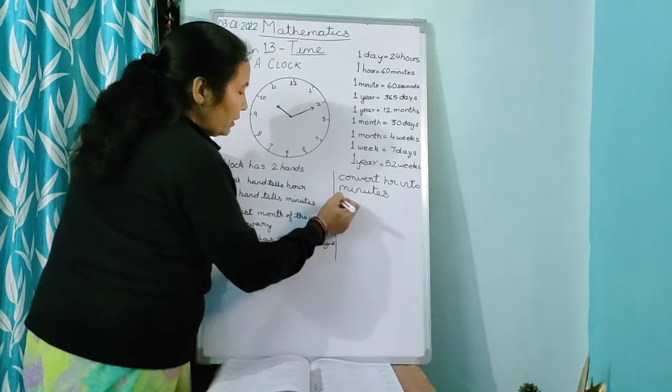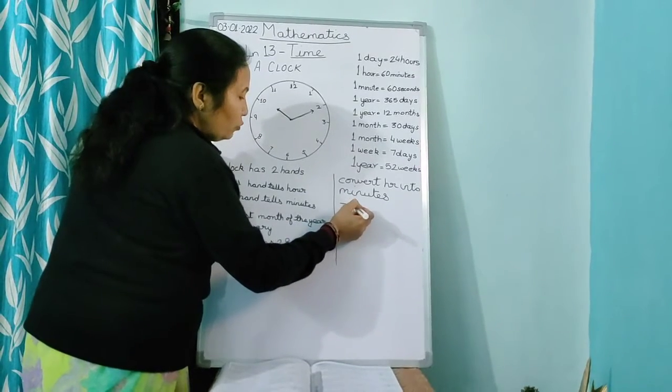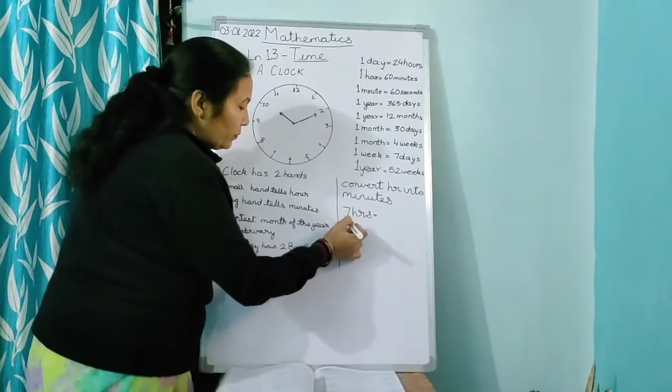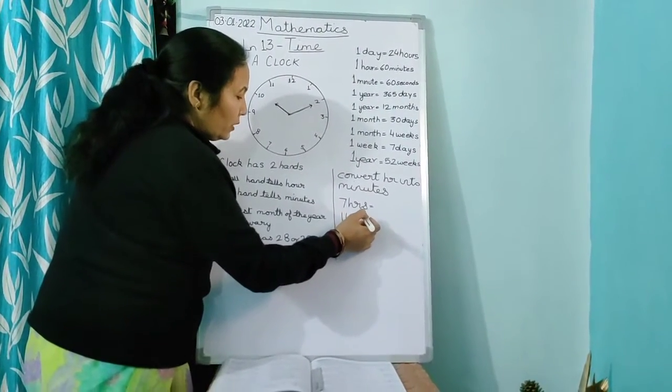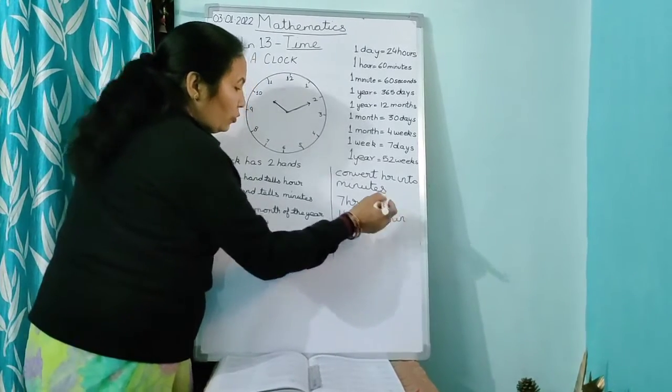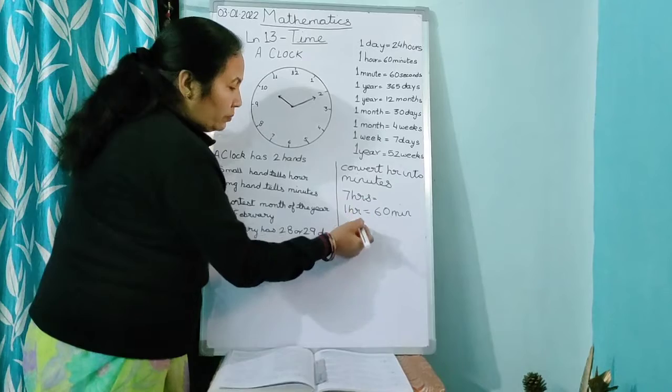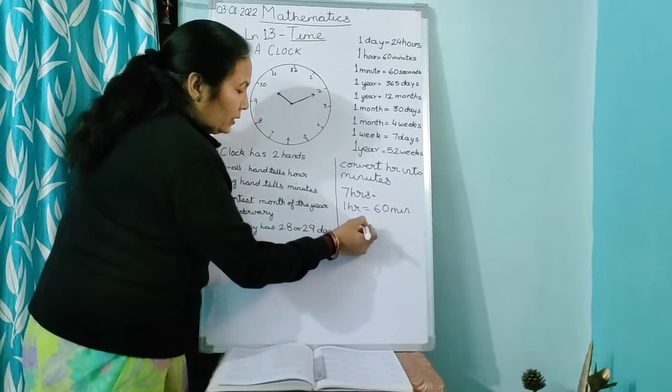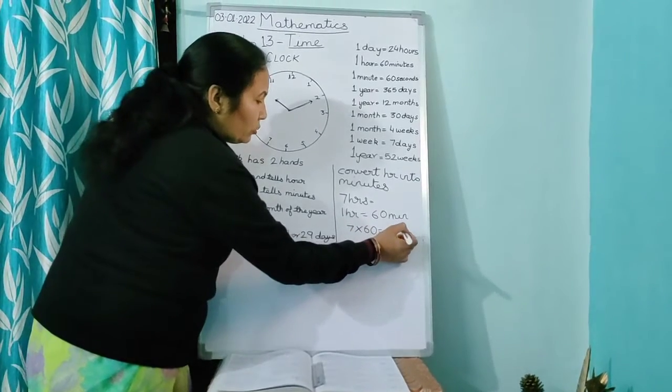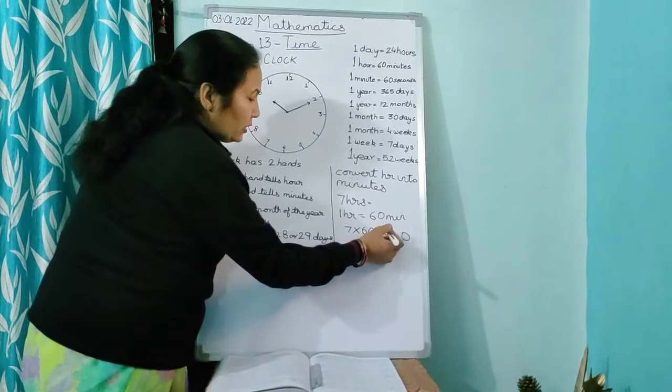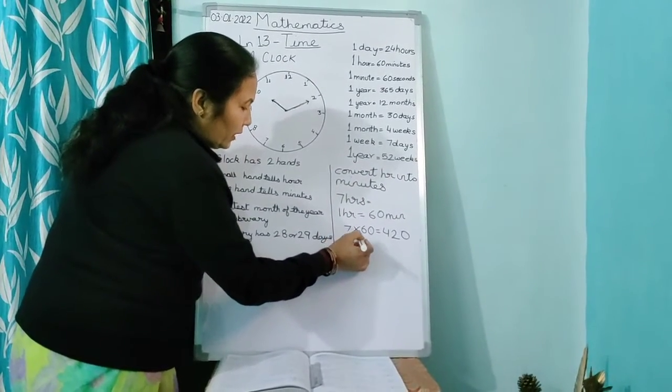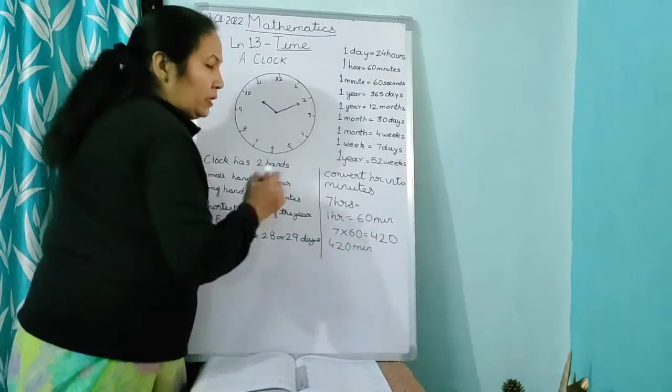In the first sum, convert hours into minutes. Now suppose you have 7 hours and you have to convert into minutes. So you will write 1 hour is equal to 60 minutes. So the next step will be, you will multiply 7 into 60 is equal to, 7 zeros are 0 and 7 sixes are 42. So your answer will be 420 minutes.